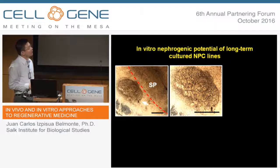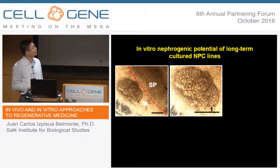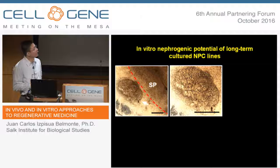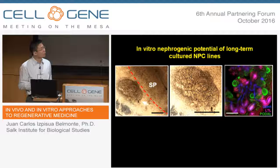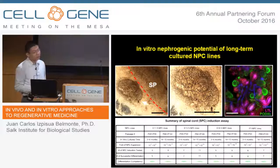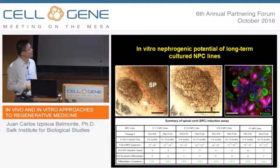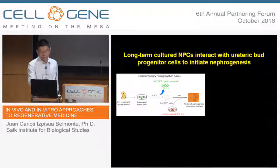The important question is: can the long-term cultured MPC lines differentiate to nephrons? We used a well-established spinal cord induction assay — we placed the MPC aggregate next to the spinal cord. After seven days, we observed the formation of numerous tubular structures. Staining showed most of the major parts of the nephron, including podocalyxin-labeled glomerulus, LTL-labeled proximal tubules, and CDH1-labeled distal tubules or loop-of-Henle structures. More impressively, even after 90 or 100 passages — more than one year and billions-fold of expansion — these cultured MPCs can still differentiate very efficiently to nephrons.